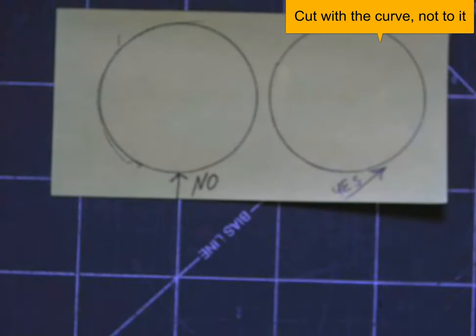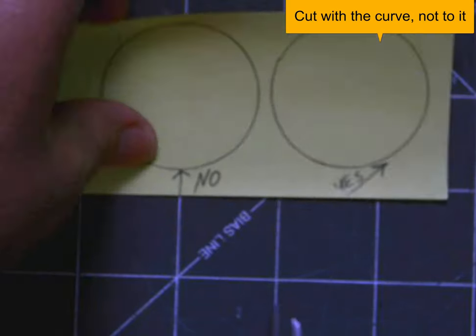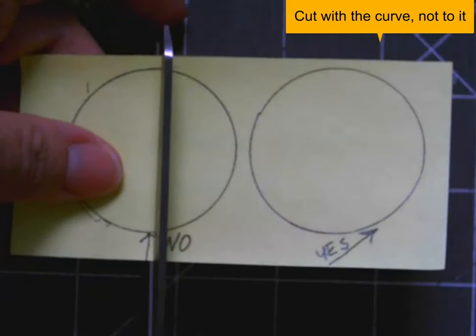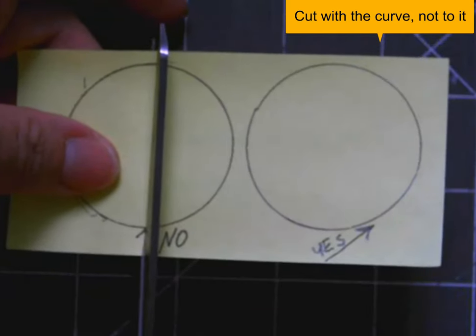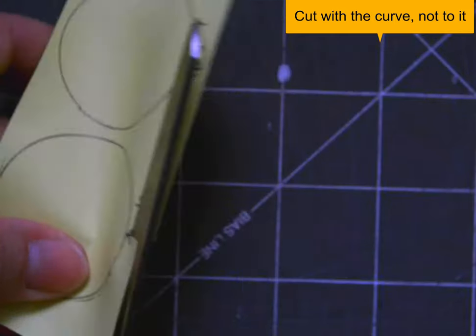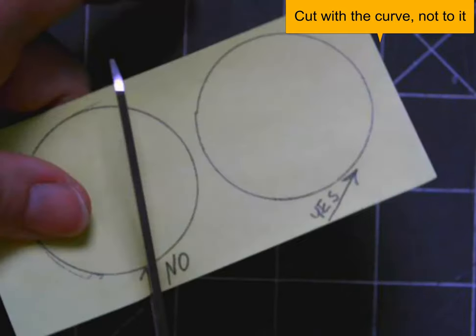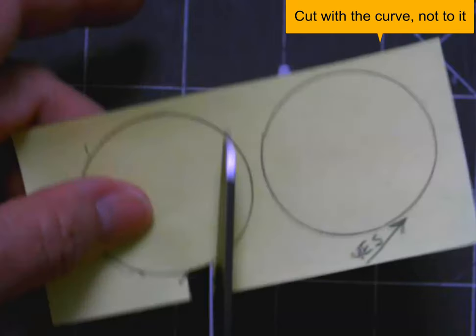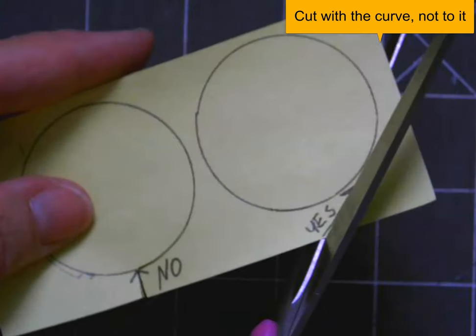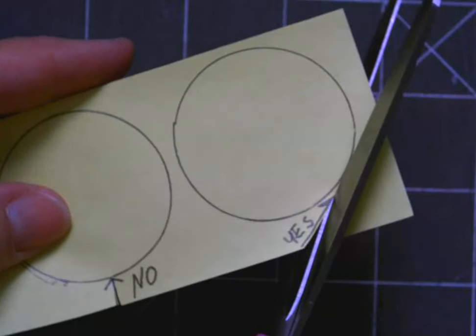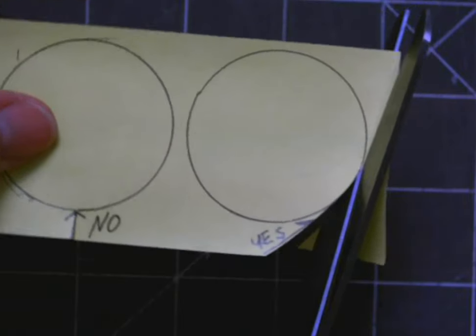If I'm cutting a curve, I want to cut with the curve, not to it. If I cut straight up to a curve edge and then try to turn the scissors, I'm going to get a glitch in the shape. The much better way is to sort of sneak up on it, come at it from an angle, and then cut smoothly all the way around.